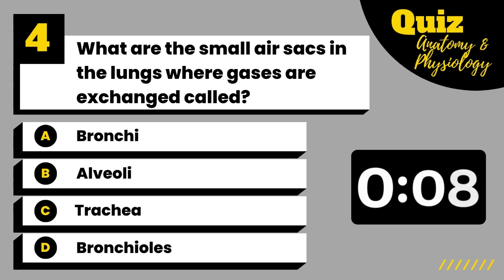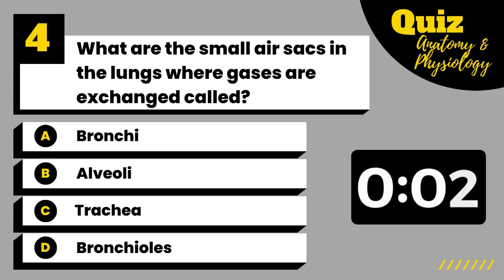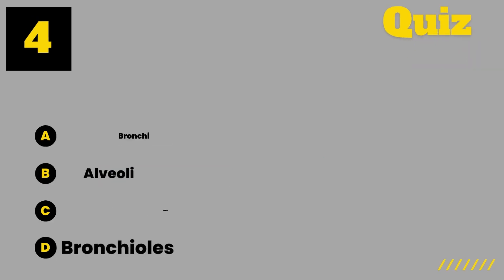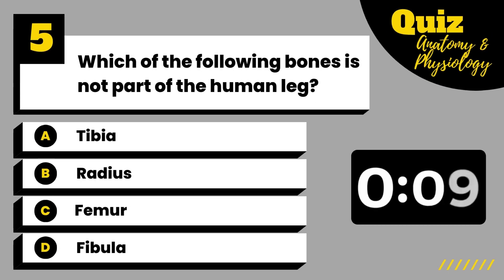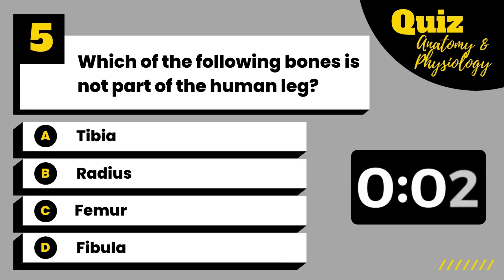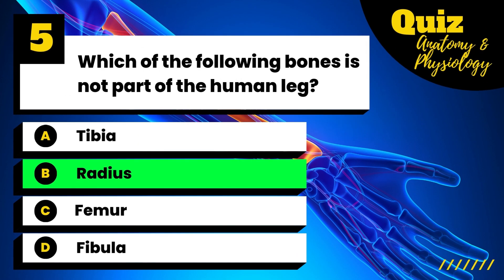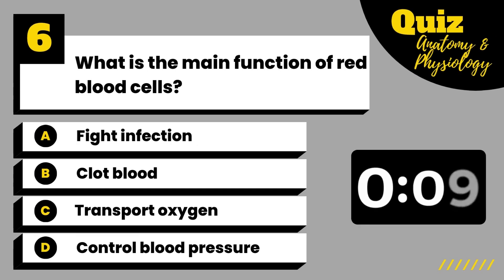What are the small air sacs in the lungs where gases are exchanged called? Which of the following bones is not part of the human leg? What is the main function of red blood cells?